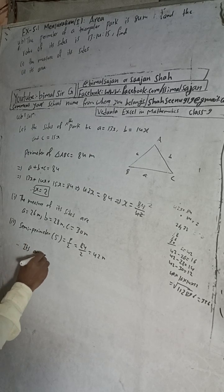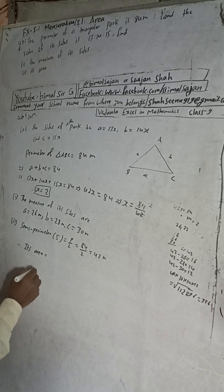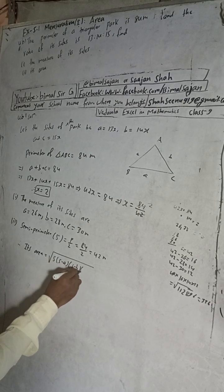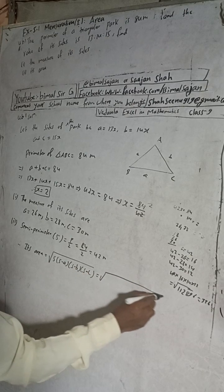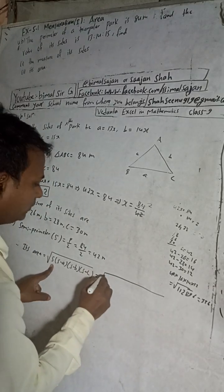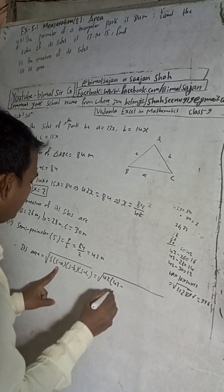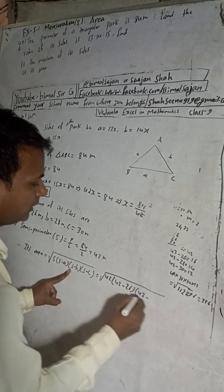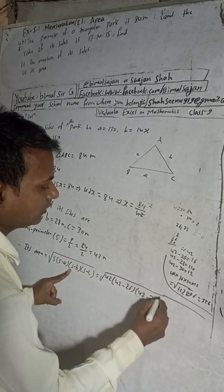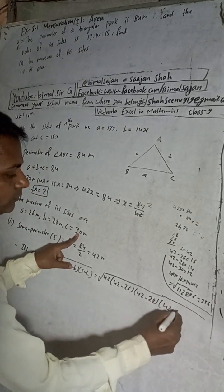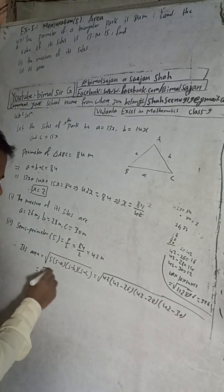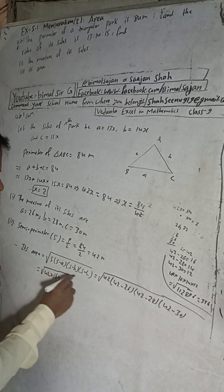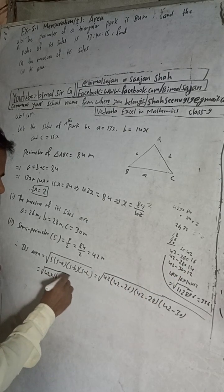Therefore the area of the triangular park. The formula is: Area = √(s(s−a)(s−b)(s−c)). Here s = 42, so: 42 − a = 42 − 26 = 16, 42 − b = 42 − 28 = 14, and 42 − c = 42 − 30 = 12. So Area = √(42 × 16 × 14 × 12).